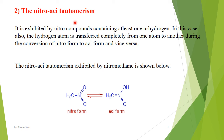The second type of tautomerism is nitro-acid tautomerism, generally seen in nitro compounds. For example, in nitromethane, the alpha hydrogen migrates to the oxygen of the nitro group, so CH3 becomes CH2 and the oxygen becomes OH. This is known as nitro-acid tautomerism. Thank you.